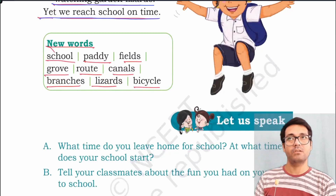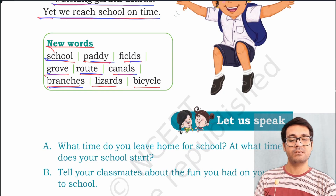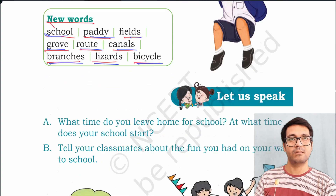New words: school, paddy, field, grove, route, canal, branches, lizards, bicycle.